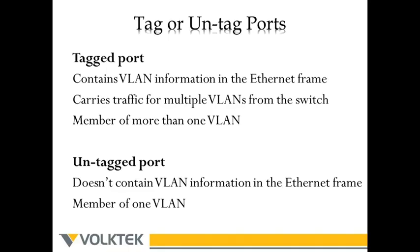Now let's see how to tag and untag a port. By default, all member ports in a VLAN are untagged, meaning frames from these ports do not carry VLAN identification information. By tagging a port, we attach source and destination addresses as well as the VLAN ID to the frames so they can identify which VLAN they belong to. Tagged ports can be members of more than one VLAN and carry traffic for multiple VLANs, whereas untagged ports can only be a member of one VLAN.